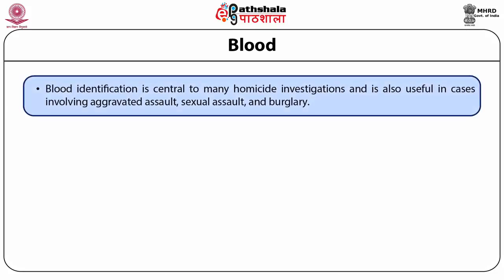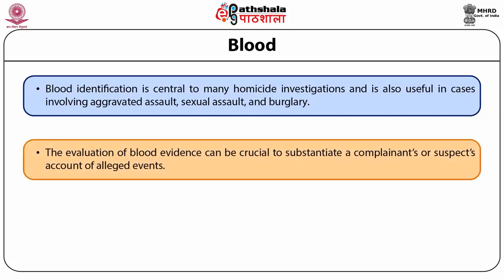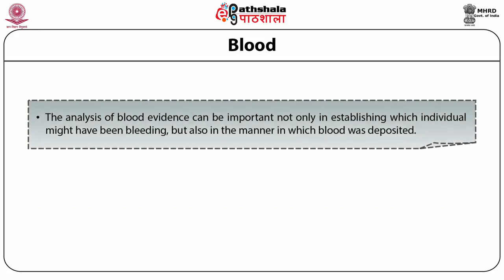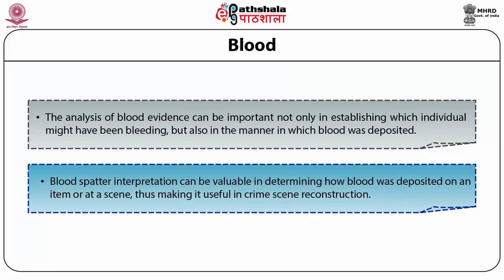Blood identification is central to many homicide investigations and is also useful in cases involving aggravated assault, sexual assault and burglary. The evaluation of blood evidence can be crucial to substantiate a complainant's or suspect's account of alleged events. The presence of blood on evidentiary items can be critical in establishing guilt or innocence. The analysis can be important in establishing which individual might have been bleeding, and blood spatter interpretations are valuable in determining how blood was deposited, making it useful in crime scene reconstruction.